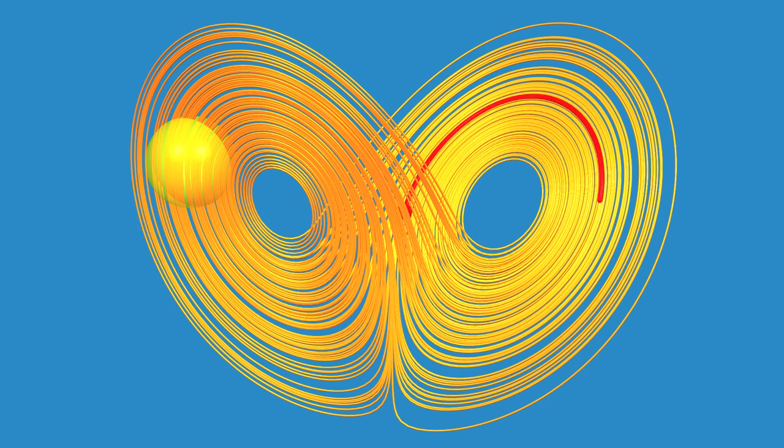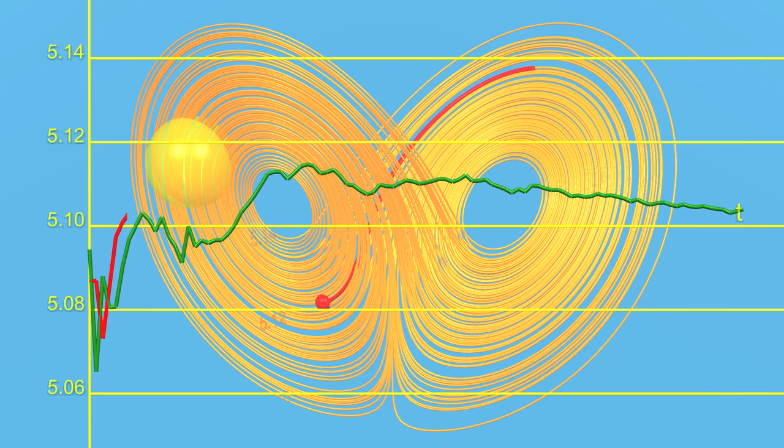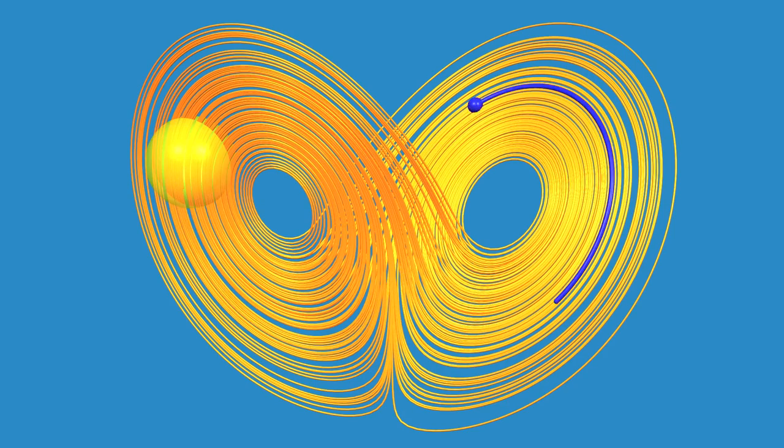Now we take a different initial condition and do the same calculation. Well again, the trajectory spends a certain amount of its time inside the ball, and the average tends to a limit. Oh, how about that? The average is the same as before, 5.1%.